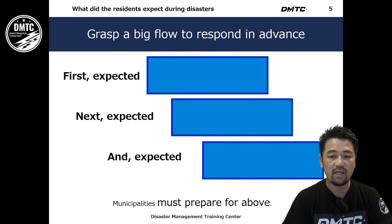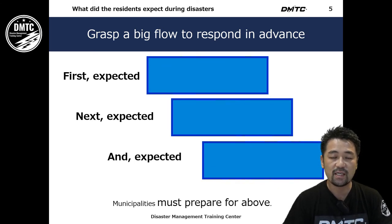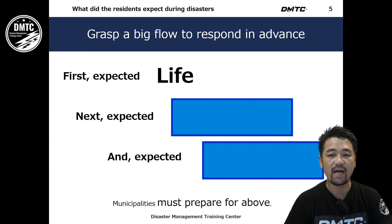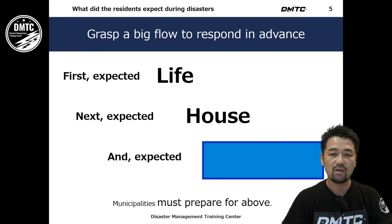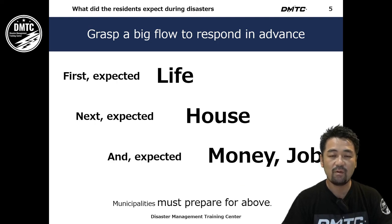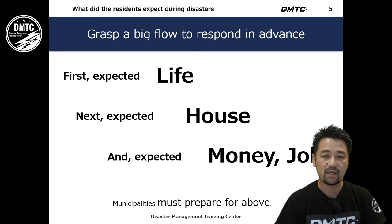To understand and respond in advance, we must think about what people need after a disaster. First, they need their life. Second, they need a house — a safe place. Third, they need money and a job. These three elements are essential. We have to prepare this kind of response in advance.